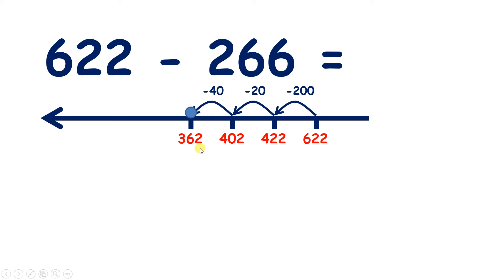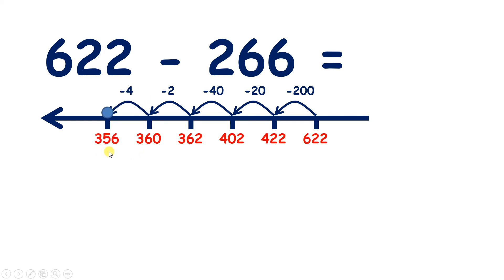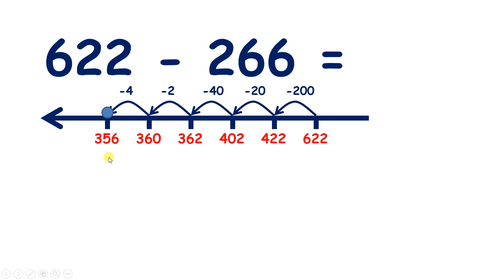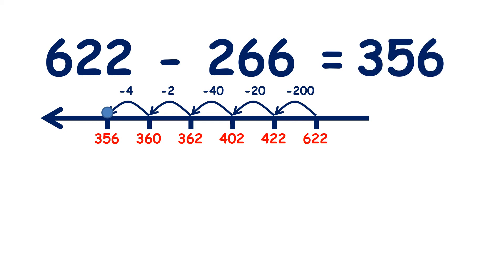Now we can subtract the 6 units. If we take away our 2 units, we have 360, and then we can take away 4 more to give us 356. So we subtracted 6 altogether. So 622 minus 266 equals 356.